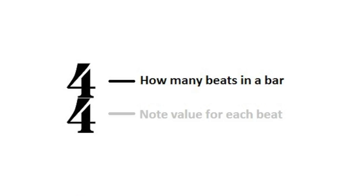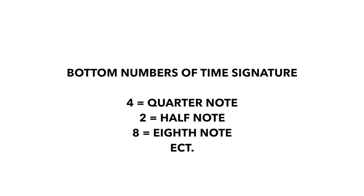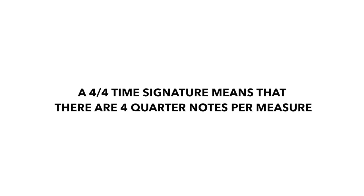While there are many other time signatures, the most traditional time signature in dance music is 4/4, so we will continue to focus on it. The top number of a 4/4 time signature refers to 4 beats per measure; the bottom number refers to the type of note. The 4 refers to quarter notes, 2 to half notes, 8 to eighth notes, etc. A 4/4 time signature basically means that there are 4 quarter notes in each measure.